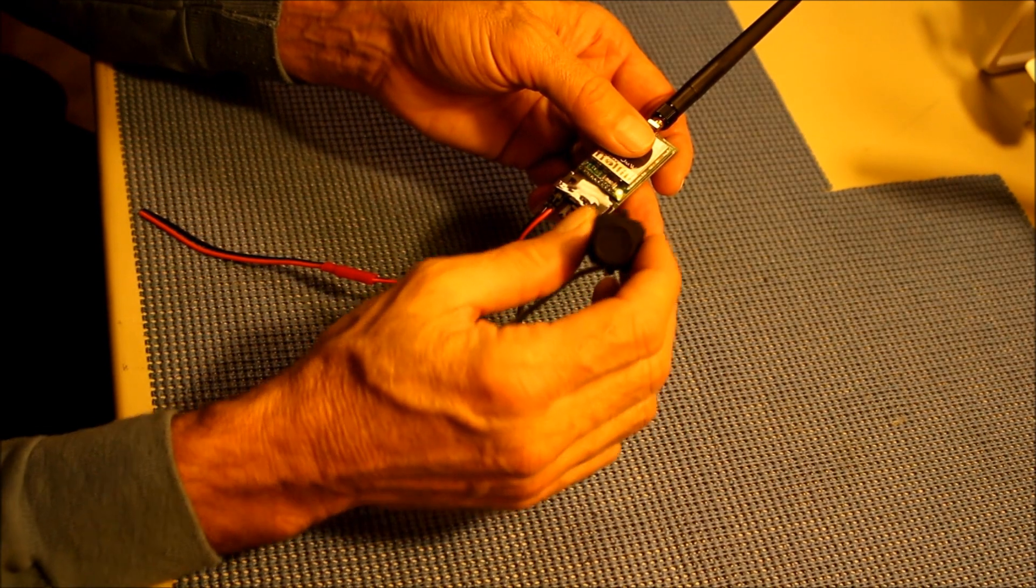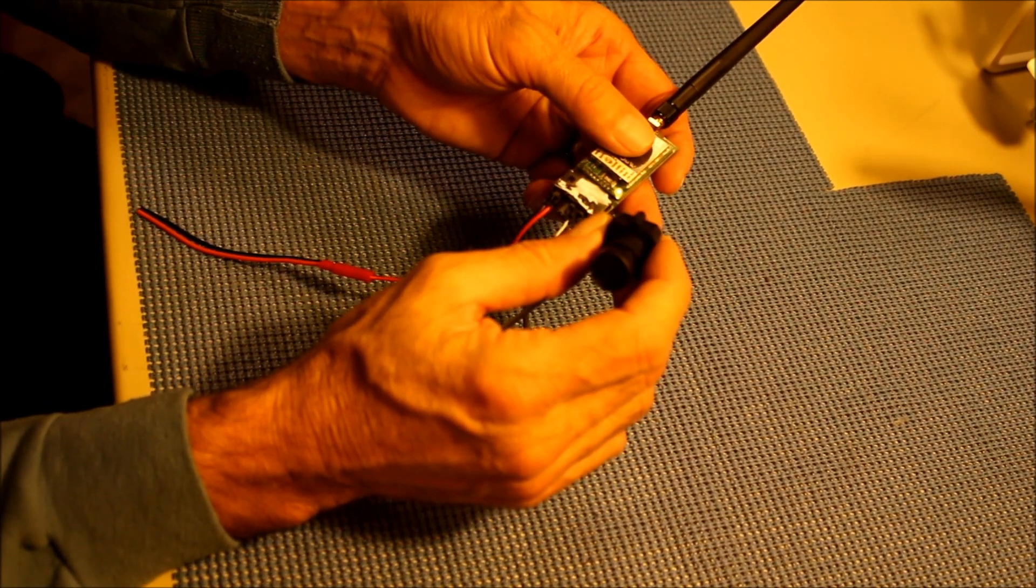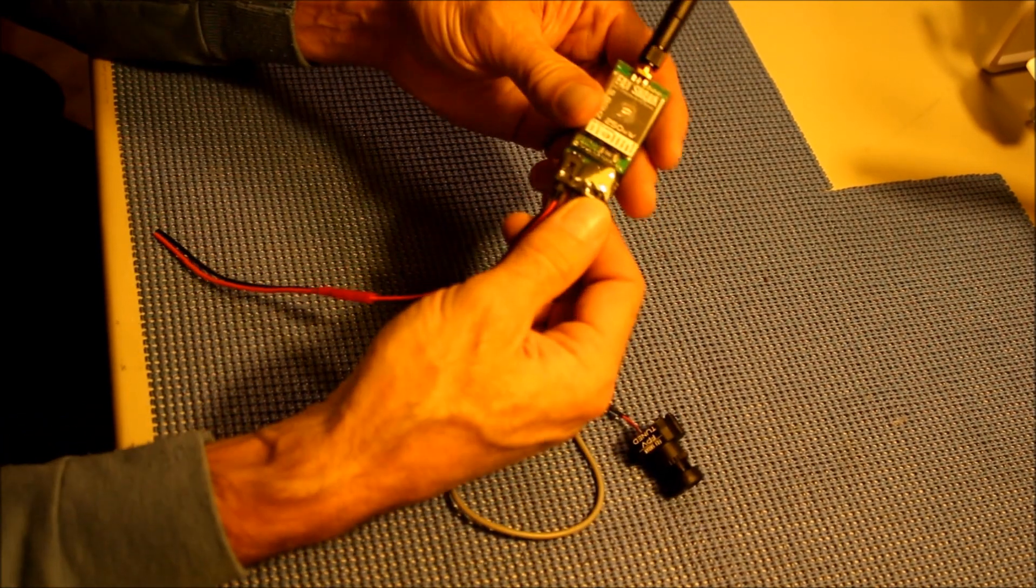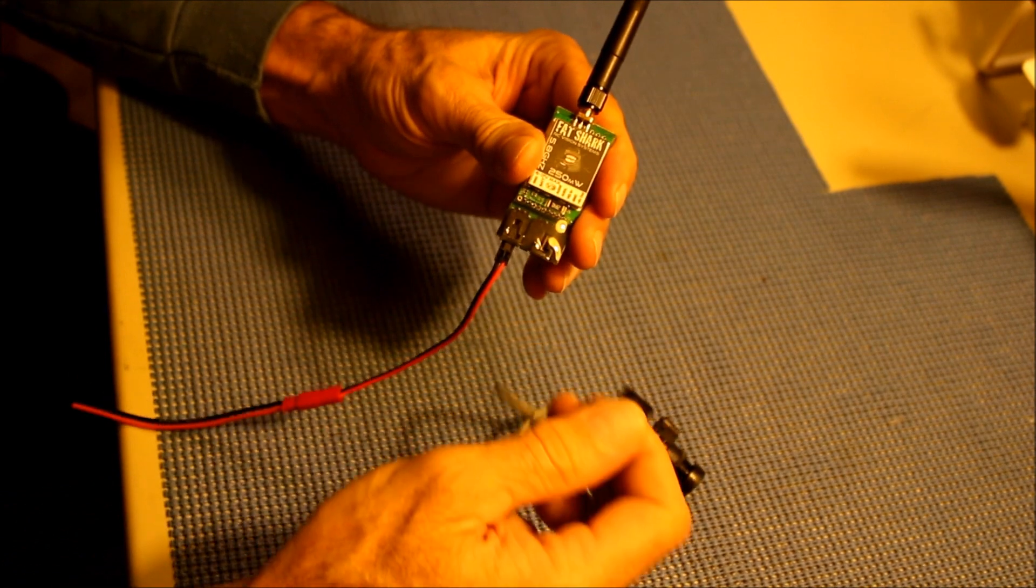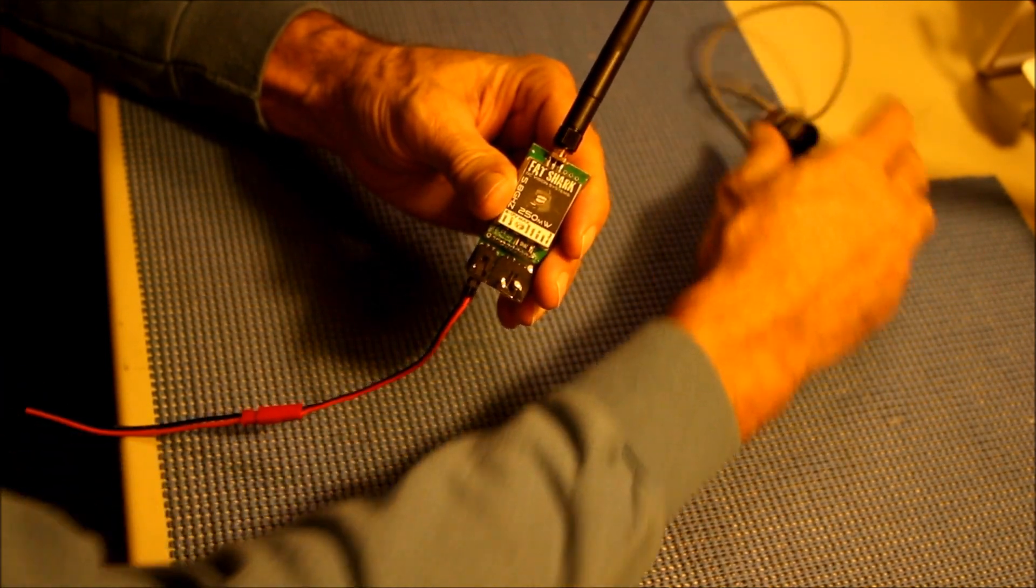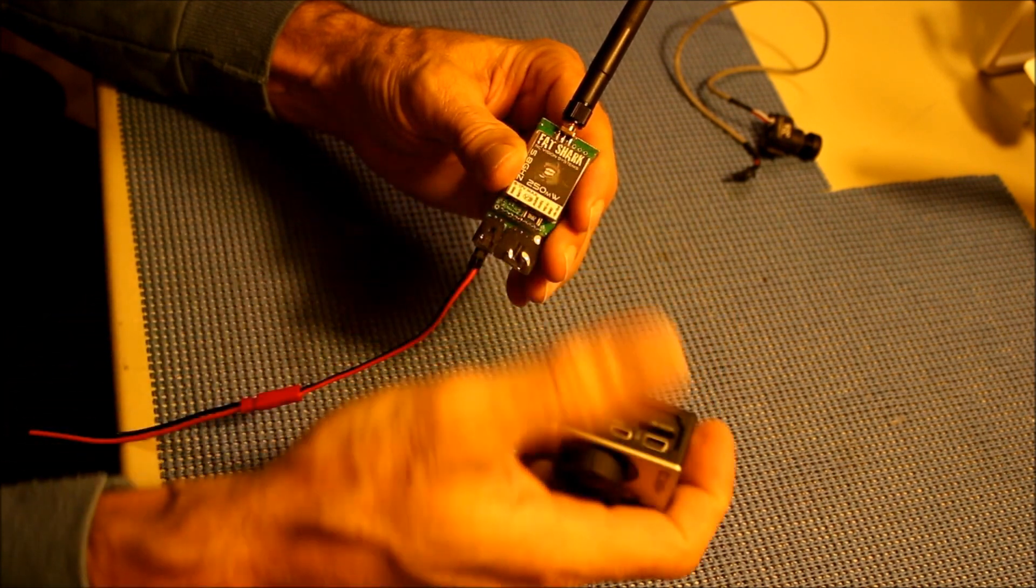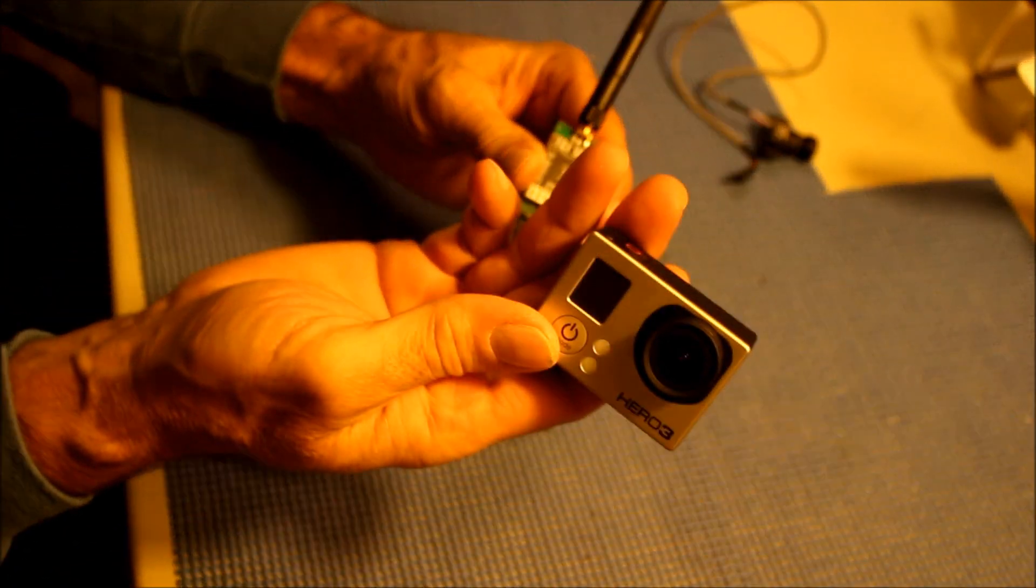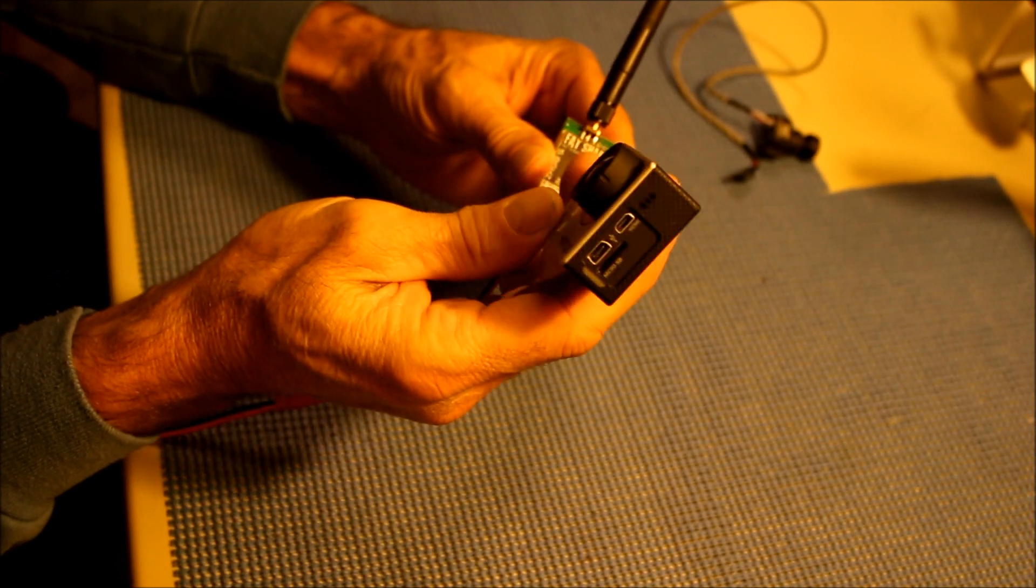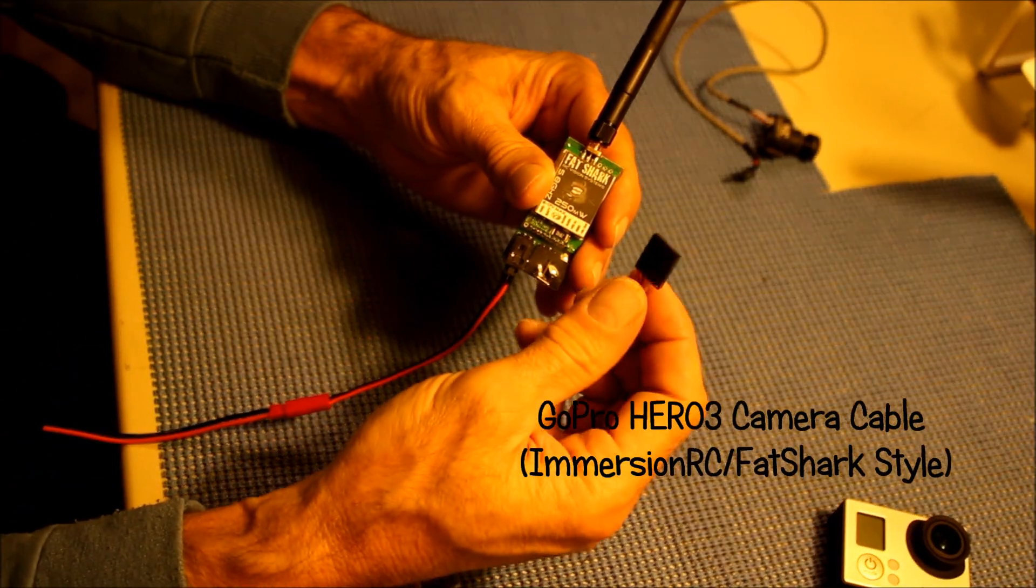Now in my case I want to use the Hero 3 Black Edition camera so we're going to remove this connection from the transmitter for the video camera. You can make a connection to the Hero 3 camera through its USB port on the side and ReadyMadeRC makes a cable for that as well. This is the cable here.